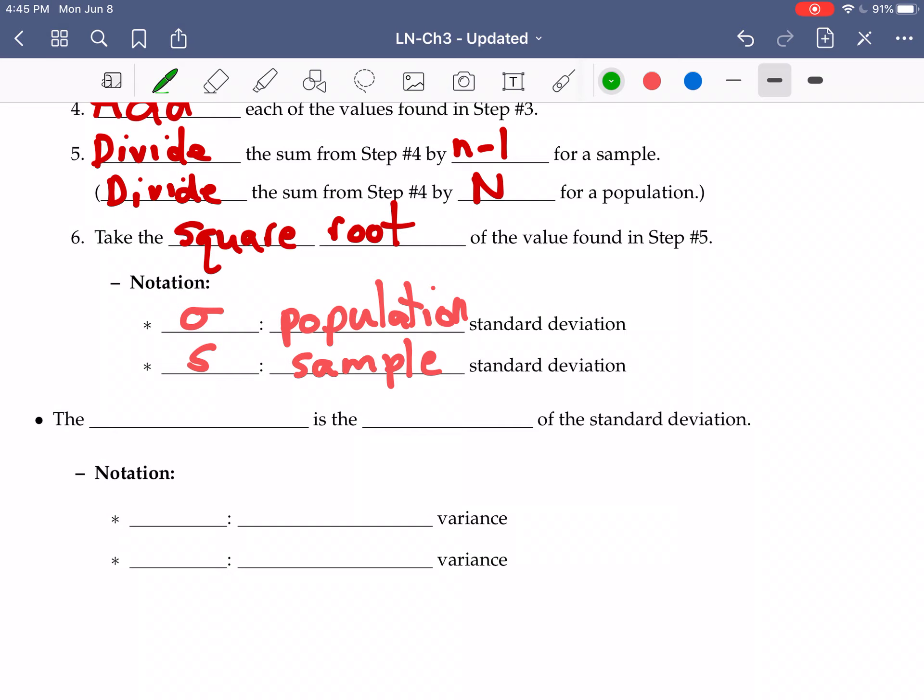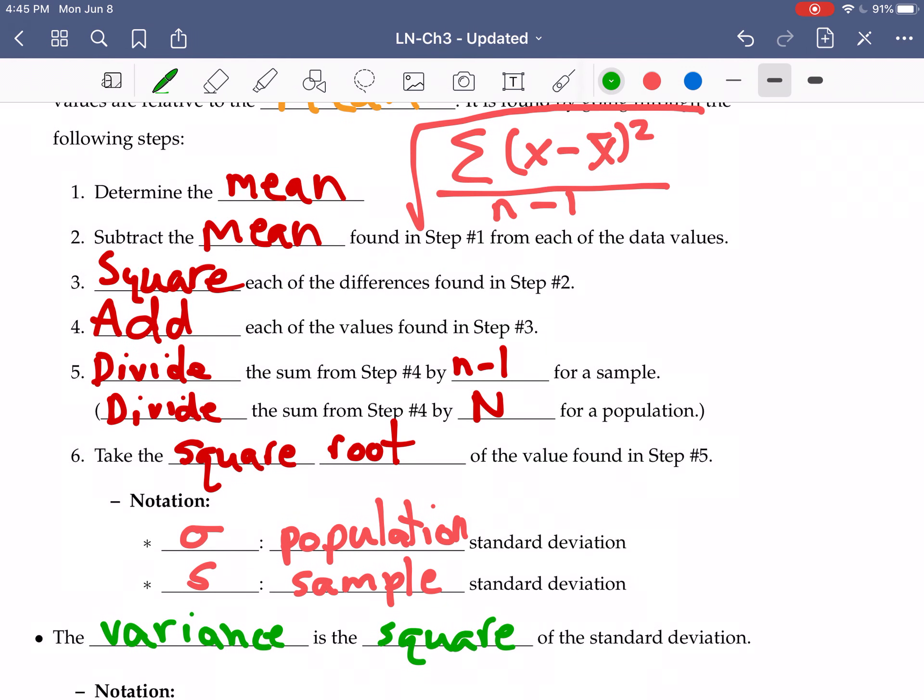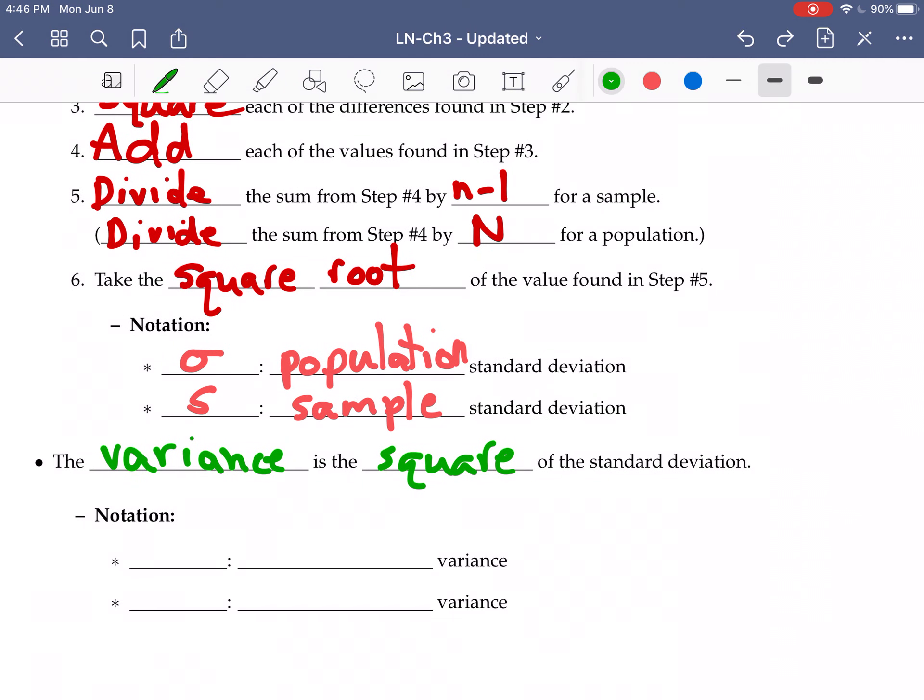Another measure of variation is the variance. The variance is simply the square of the standard deviation. That's a weird way to put it, maybe, because the variance is really that value you have at the end of step five. Because step six, you're taking the square root. So if you undo the square root, if you square it, then you're just back to step five. So the variance is this value that shows up in the process along the way to find the standard deviation.